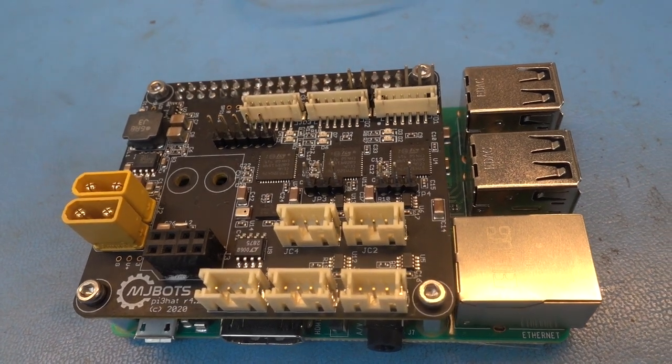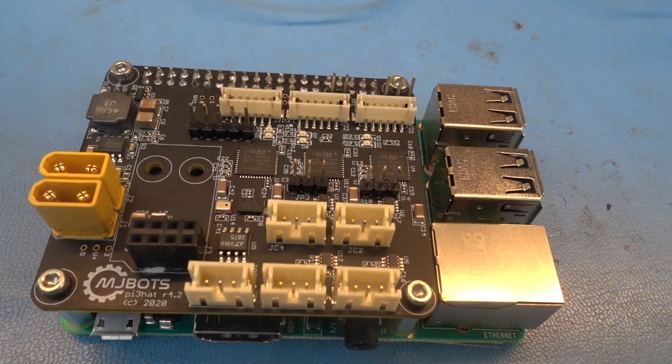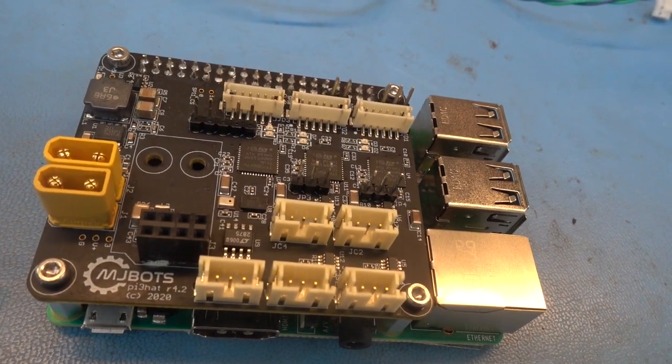By exposing four high-speed CAN-FD buses, the Pi-3-hat lets even a Raspberry Pi perform high-rate control of robotic systems up to a kilohertz.